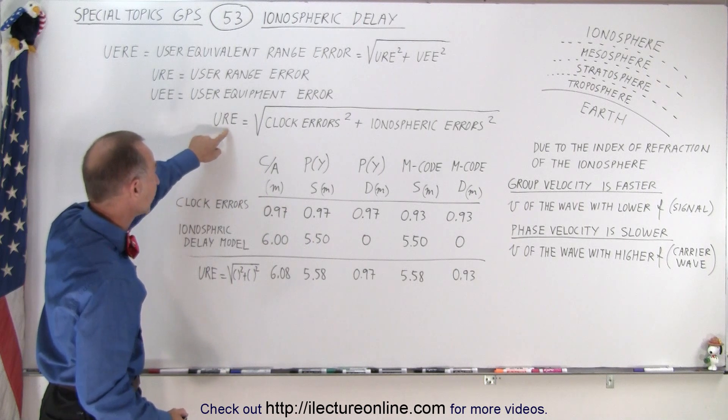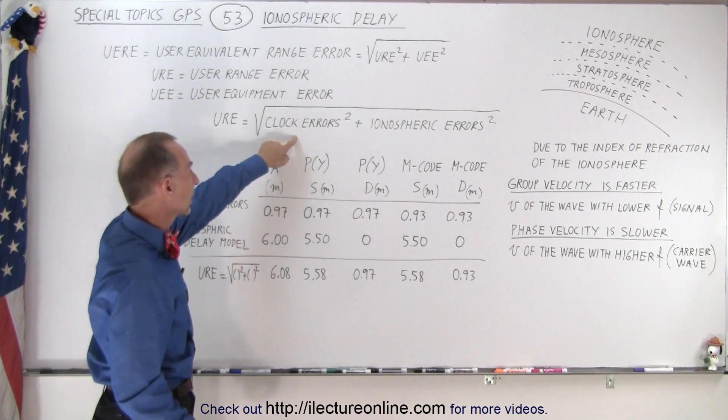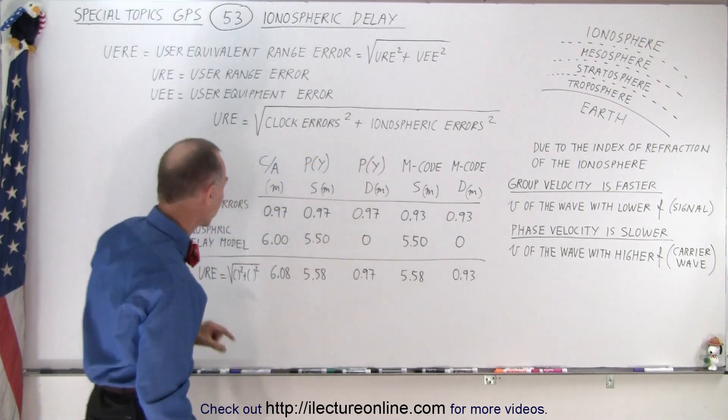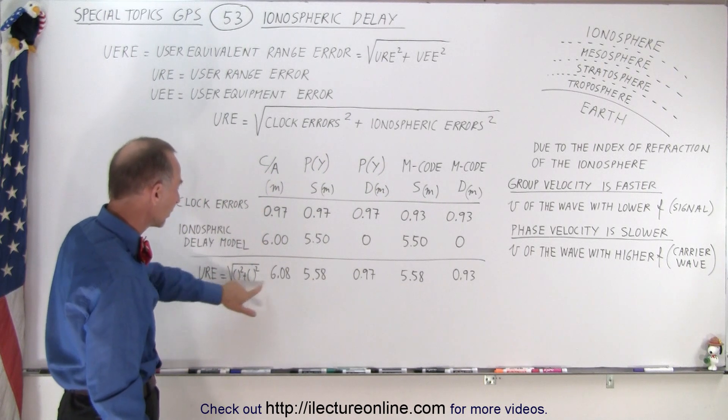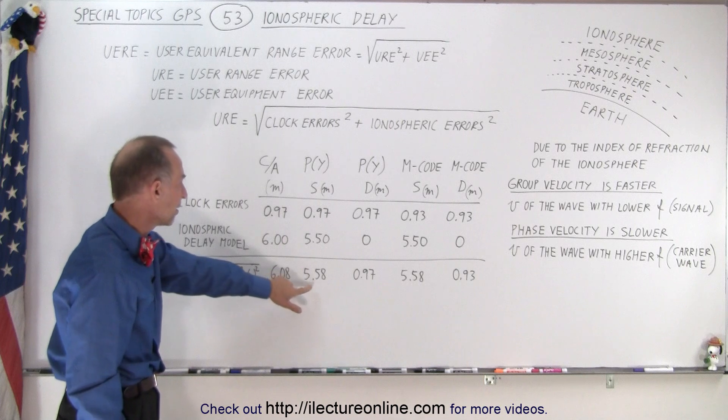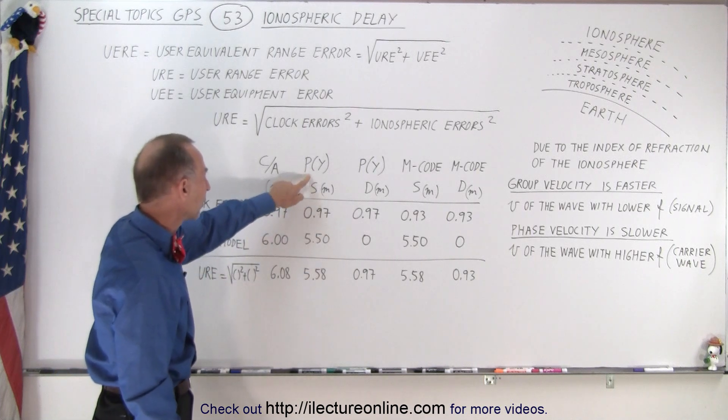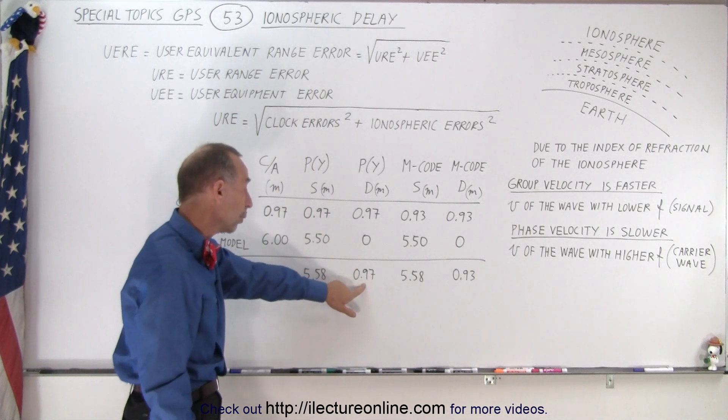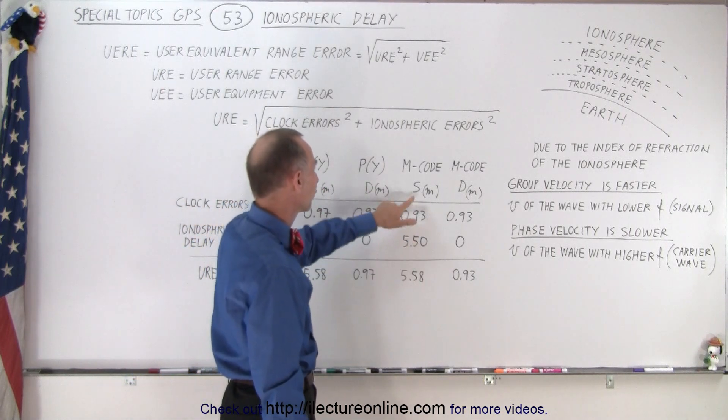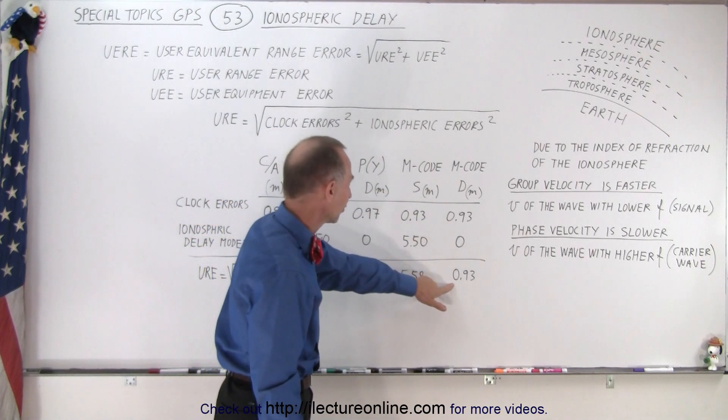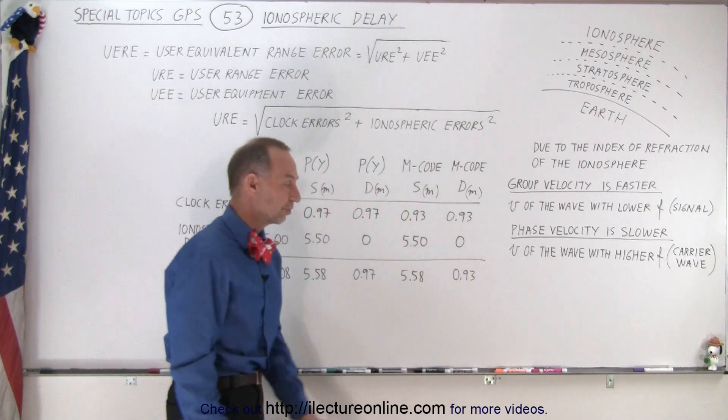And then of course, as we saw, the URE is equal to the square root of the clock error squared plus the ionospheric error squared. If we square these two numbers, add them together and take the square root, then we get 6.08 for CA, 5.58 for Y code in single channel mode, 0.97 for Y code in dual channel, 5.58 for M code in single channel, and 0.93 for M code in dual channel.